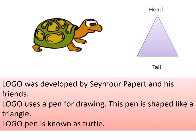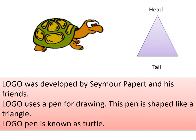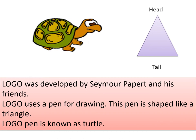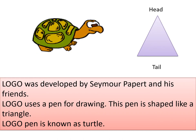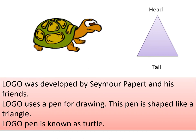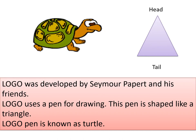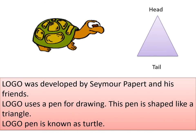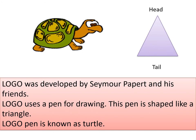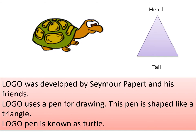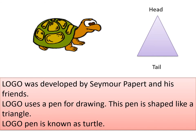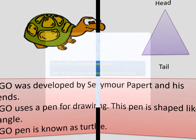Logo uses a pen for drawing and this pen is shaped like a triangle. This Logo pen is known as a turtle. The pen of Logo is called a turtle, but it is shaped like a triangle with a pointed head and a broad tail. The pointed end is called the head and the broad end is called the tail.